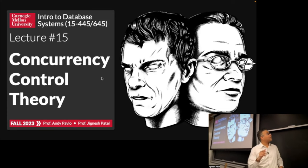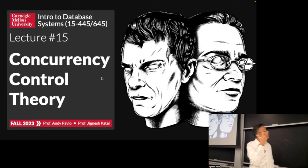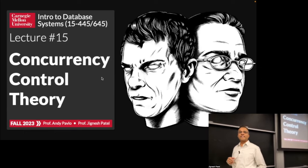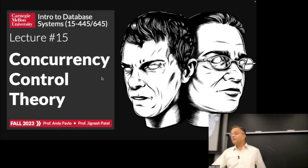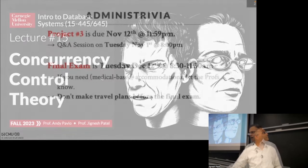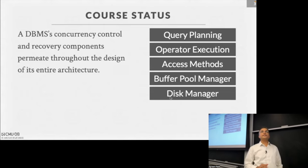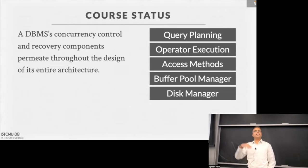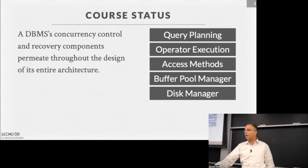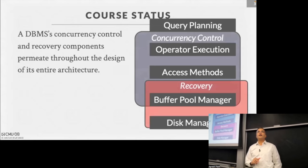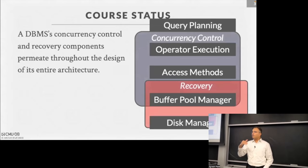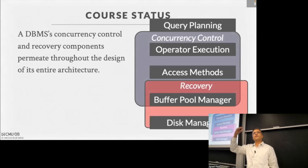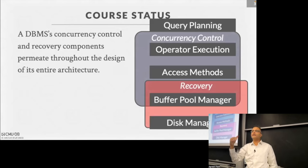Sorry about taking a little bit of time to get started — I had a bunch of people at office hours. We're going to talk about concurrency control today. You've seen this diagram of what a database engine looks like as a modular architecture. We are going to talk about concurrency control mechanisms that hit across these different layers, largely the operator execution and access method layers.